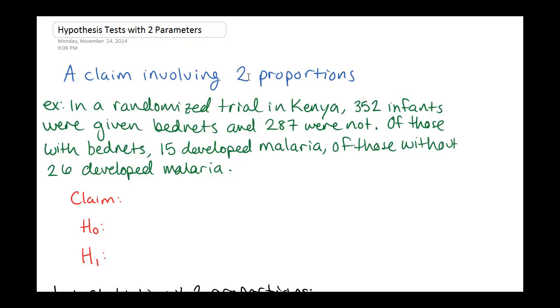In a randomized trial in Kenya, 352 infants were given bed nets to keep out mosquitoes and 287 were not. These are two different samples that are randomly assigned so they're independent simple random samples. Of those infants that did have bed nets, 15 out of the 352 developed malaria, and of those without bed nets, 26 developed malaria. We have the proportion of infants with bed nets, I'll call that p1, which was 15 out of 352. This is a sample proportion so I'll call it p-hat one. This comes out to about 0.043 or about 4.3 percent.